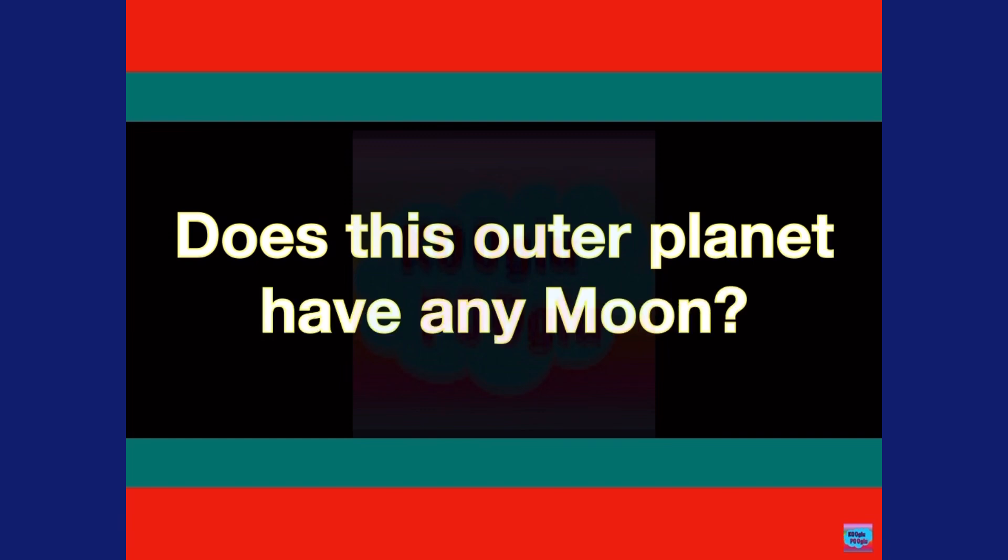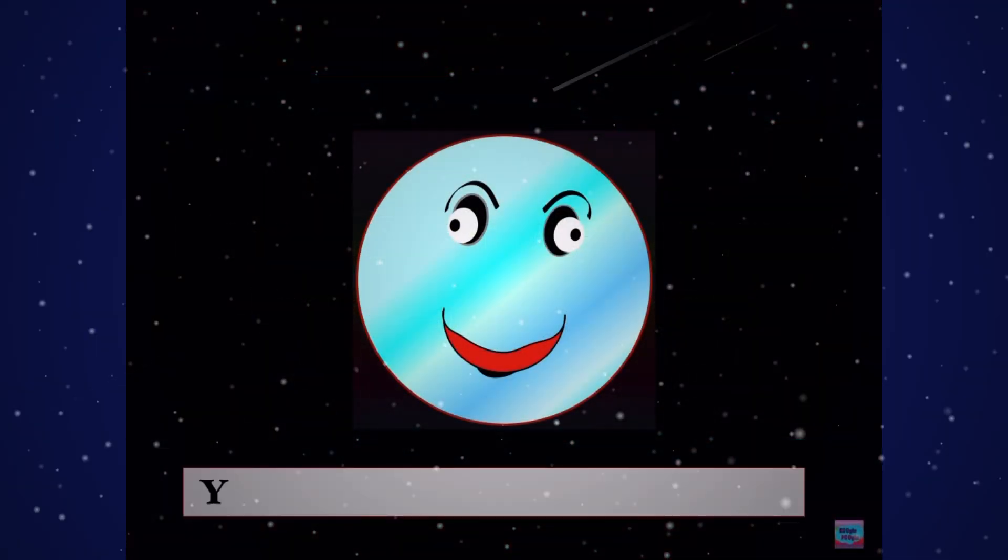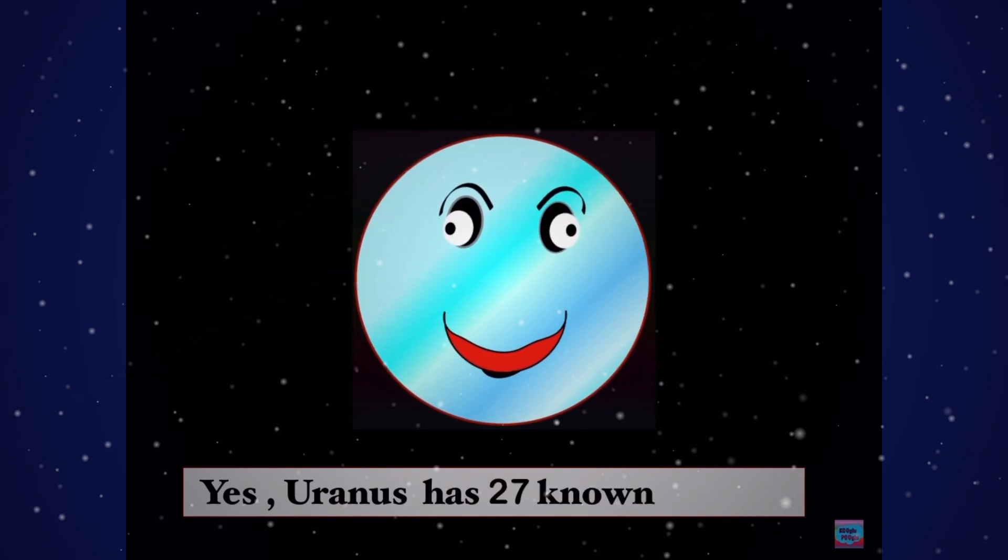Does this outer planet have any moon or moons? Uranus has 27 known moons. There's still more to discover.